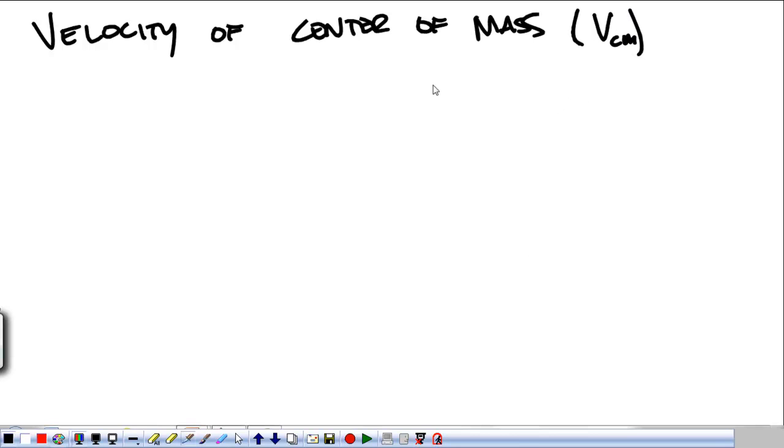What we're going to do from there is talk about the velocity of the center of mass. I use Vcm for short. So the velocity of the center of mass is going to be the position of the center of mass divided by time.